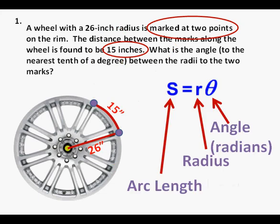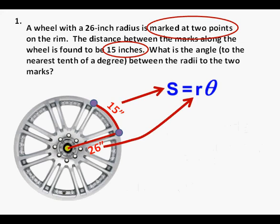Next we bring out the arc length formula, s equals r times theta, where s is the arc length, r is the radius, and theta is the angle in radians. We need to be sure that our radius and arc length are in the same units. In this case we see the arc length and radius are both in inches. From our drawing we have our radius of 26 inches and our arc length of 15 inches.